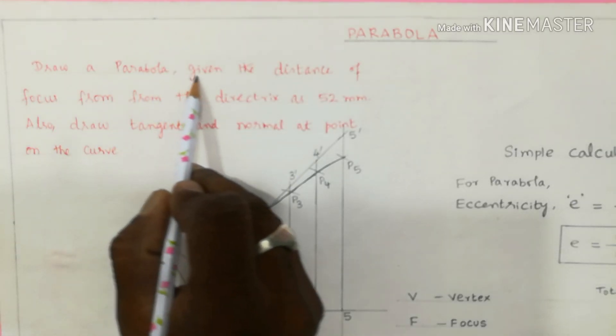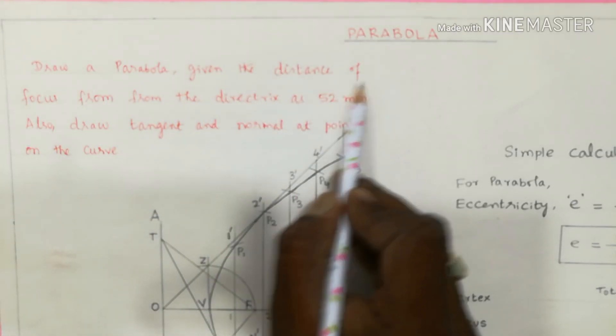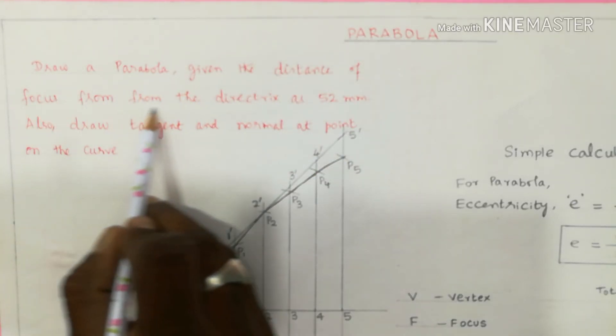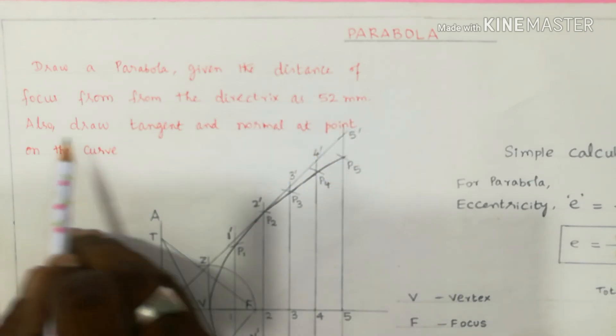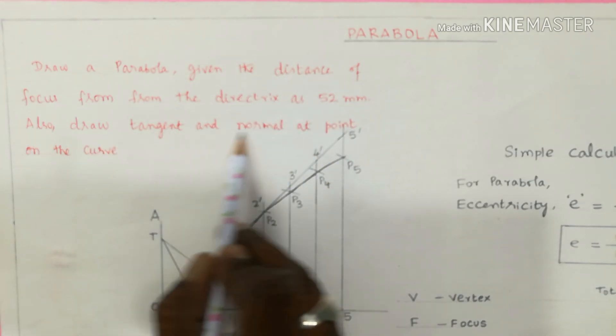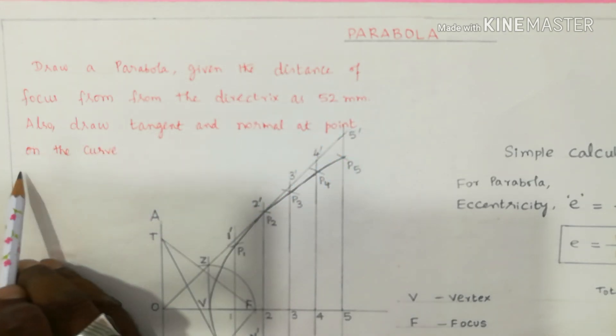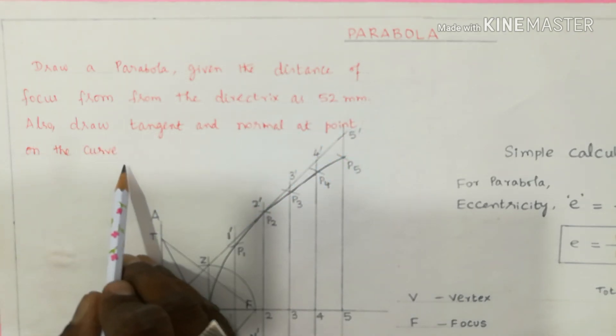Draw a parabola given the distance of focus from the directrix as 52 mm. Also draw a tangent and normal at any point on the curve.